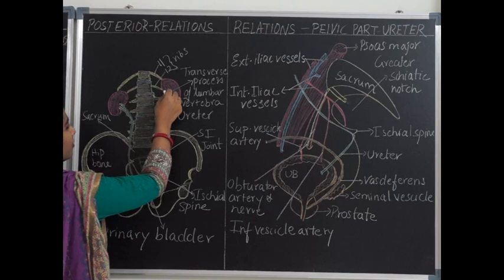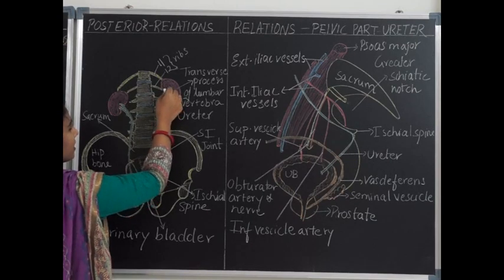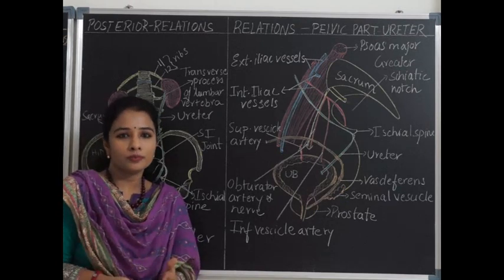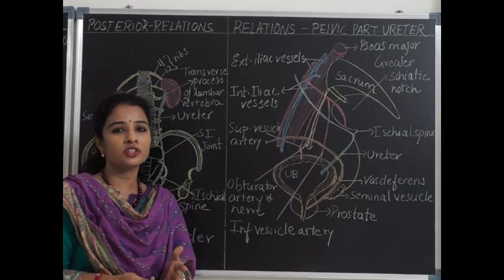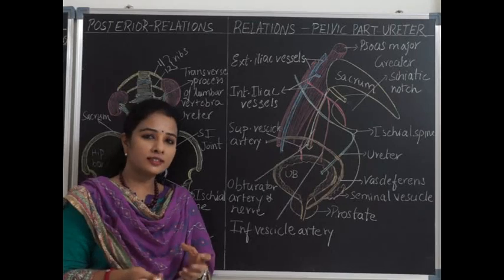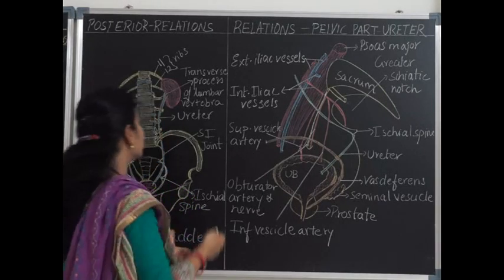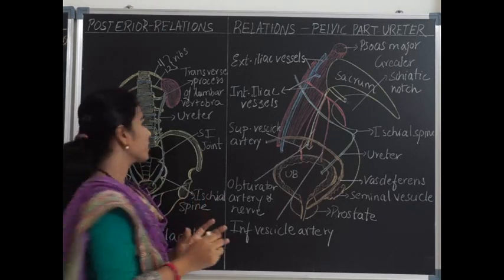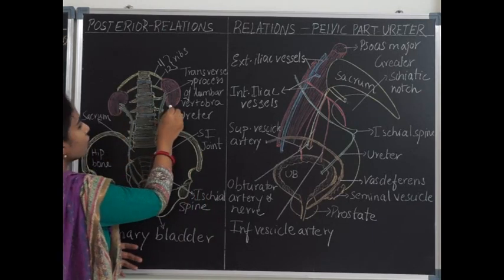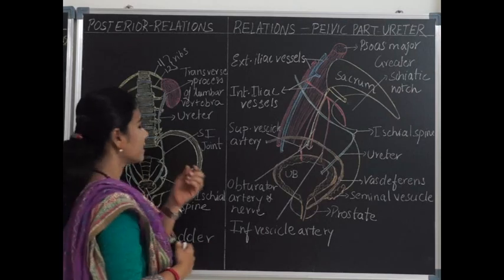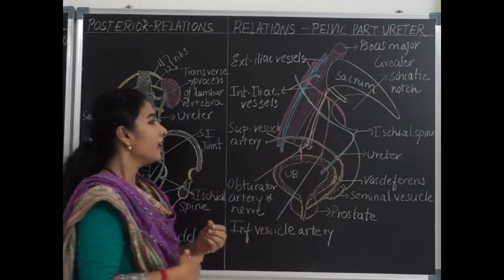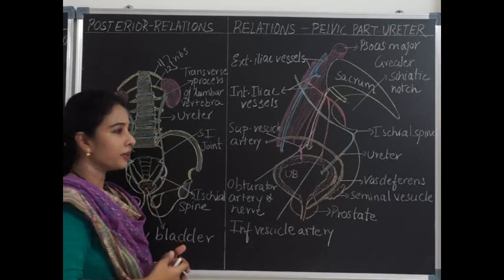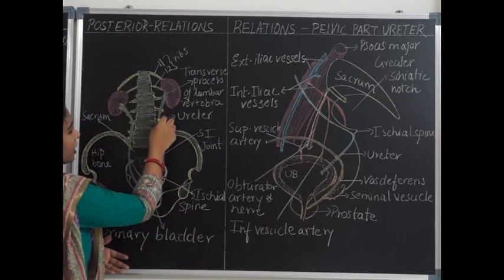The course of the ureter begins from the renal sinus, that is from the hilum of the kidney, where minor calyces join to form major calyces, and major calyces join to form the renal pelvis. The renal pelvis is initially a dilated funnel-like structure, and when it comes near the lower pole of the kidney it starts getting constricted and narrowed down, after which it continues as the ureter proper.